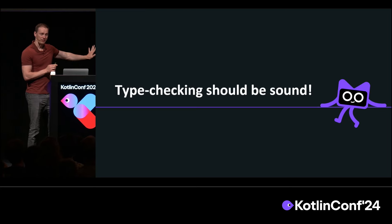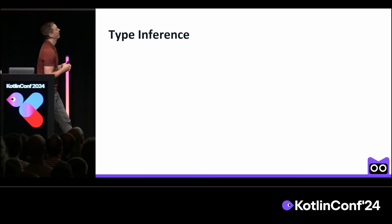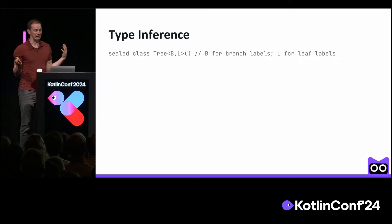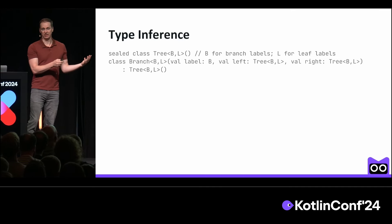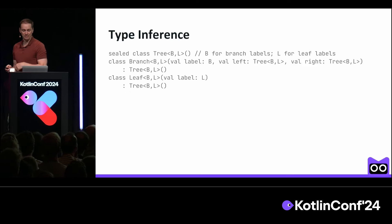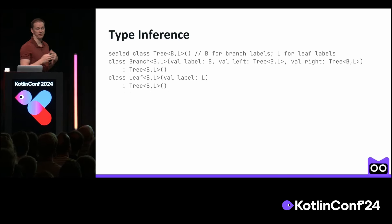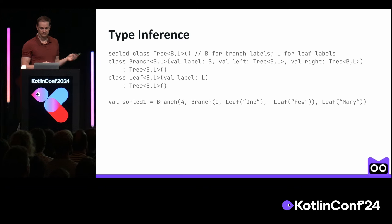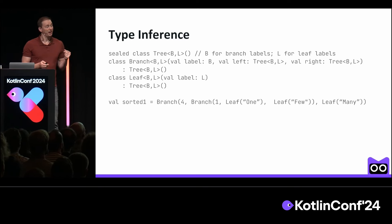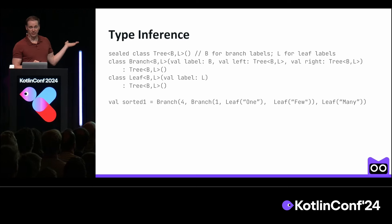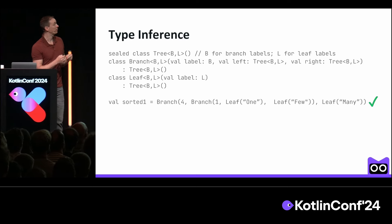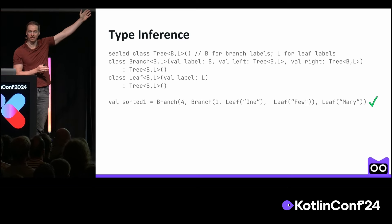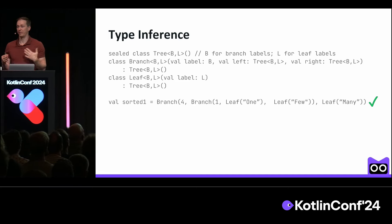That's half of the picture of revamping. The other half is type inference. To see a problem we have here, let's consider a tree class with branch nodes with labels of type B and leaf nodes with label of type L. With this very generic formulation of trees, we can represent a binary sorted tree for the adjective to use for a given quantity. If we type check this program, everything works great. This is super important because without type inference, you would have to write out 10 type arguments in this program. Type inference is a critical part of the Kotlin experience.